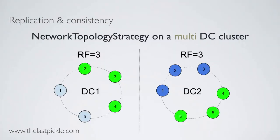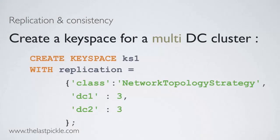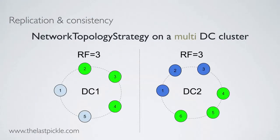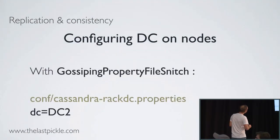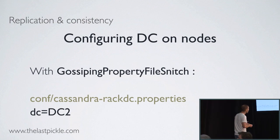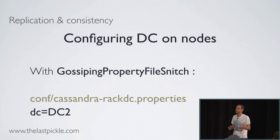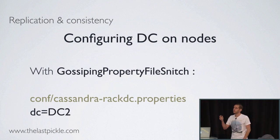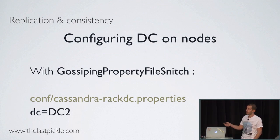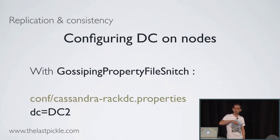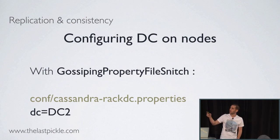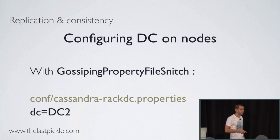You can set different numbers of replicas on the DCs of the same cluster, and you can have a different number of nodes in separate DCs of the same cluster. So if we run this statement on this cluster, we will get a balanced set of replicas on each DC. To configure the DC on your nodes, considering you are not on AWS where you will use the EC2 snitch, you will most likely use a gossiping property file snitch, which allows you to specify on each node the DC it belongs to in the cassandra-rackdc.properties file.